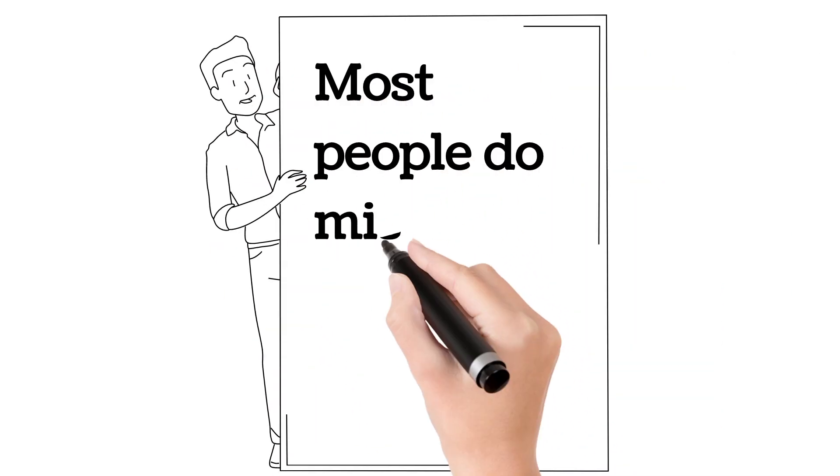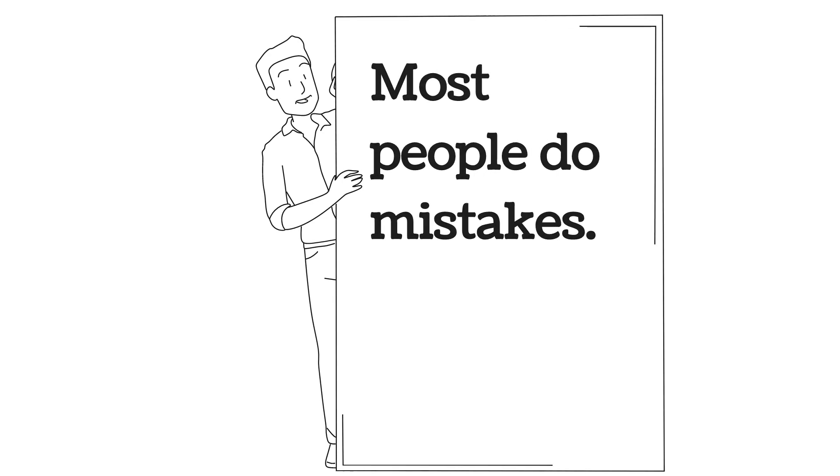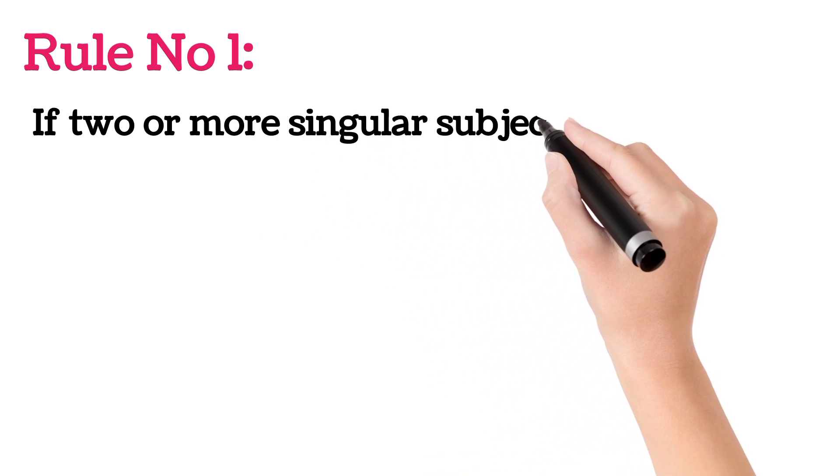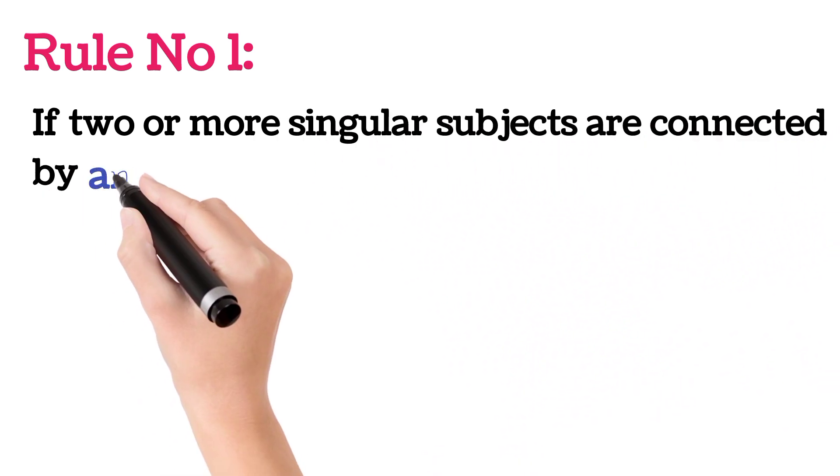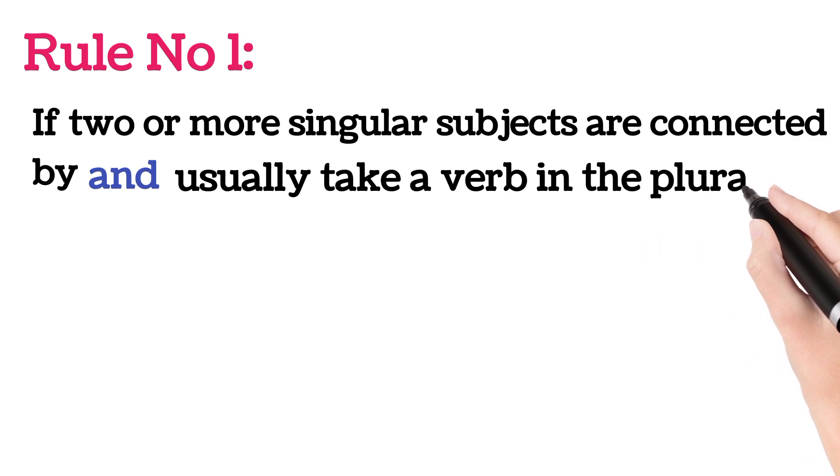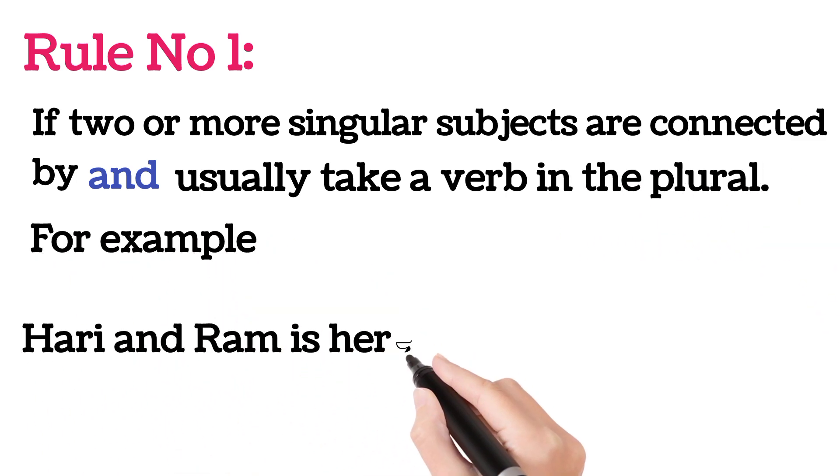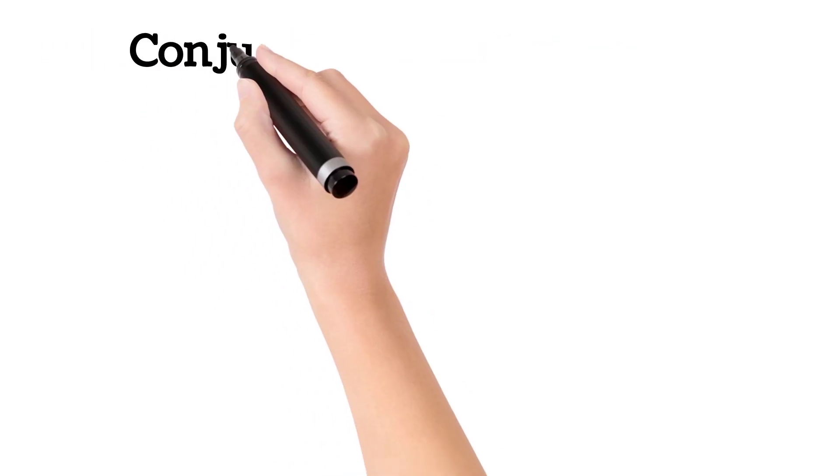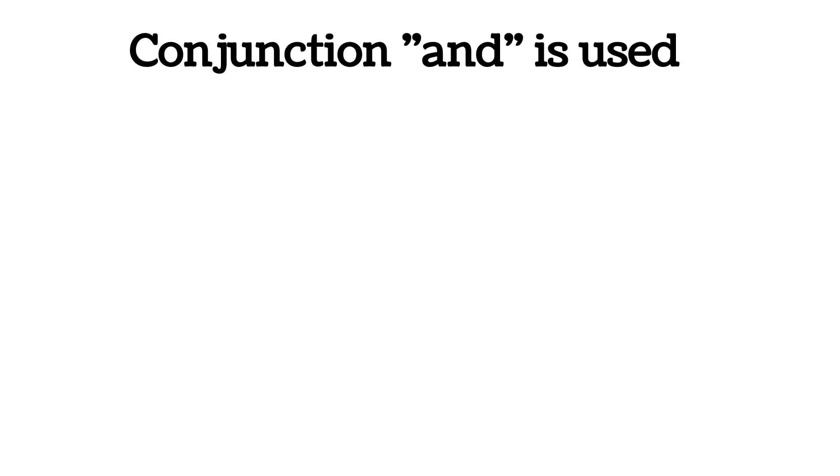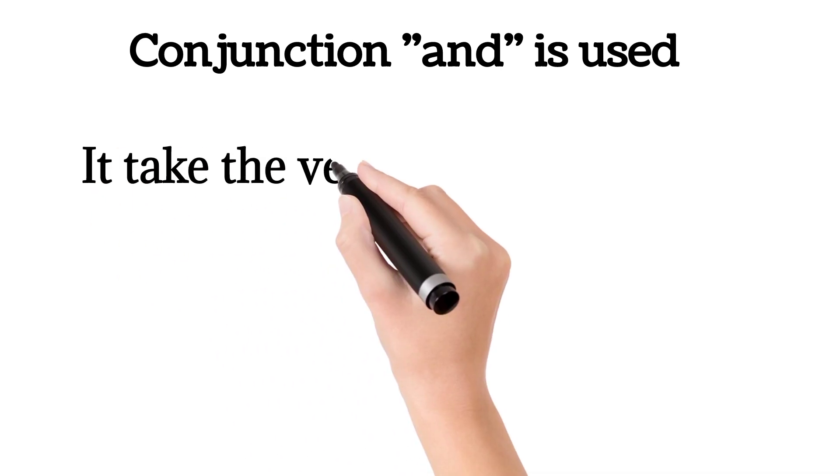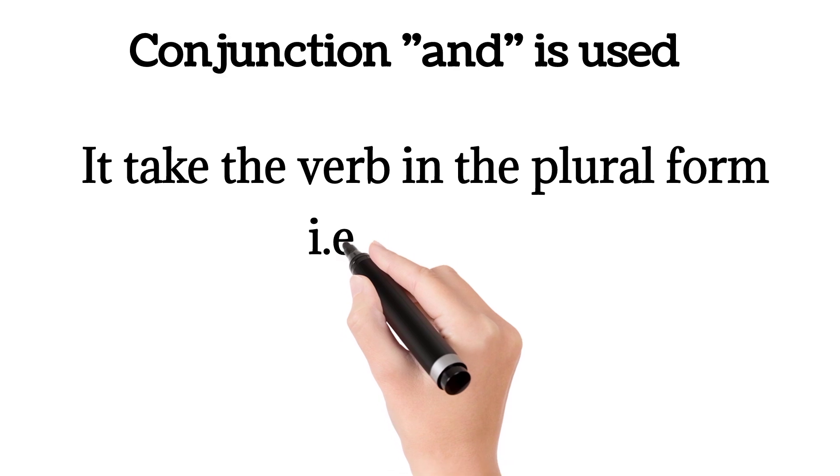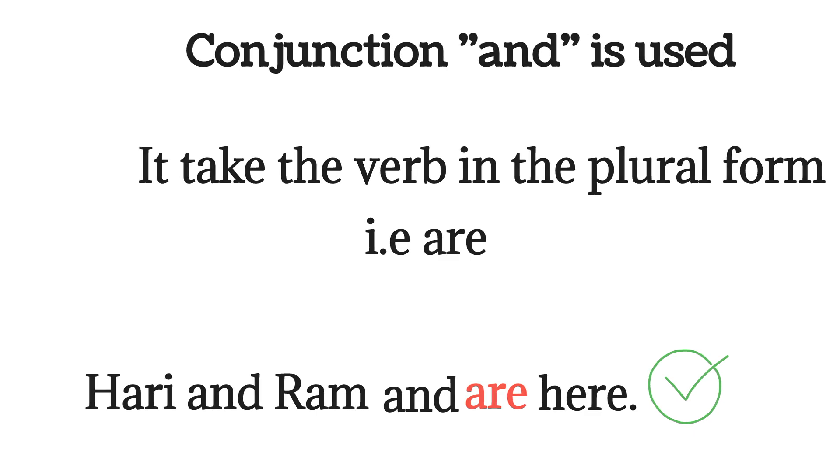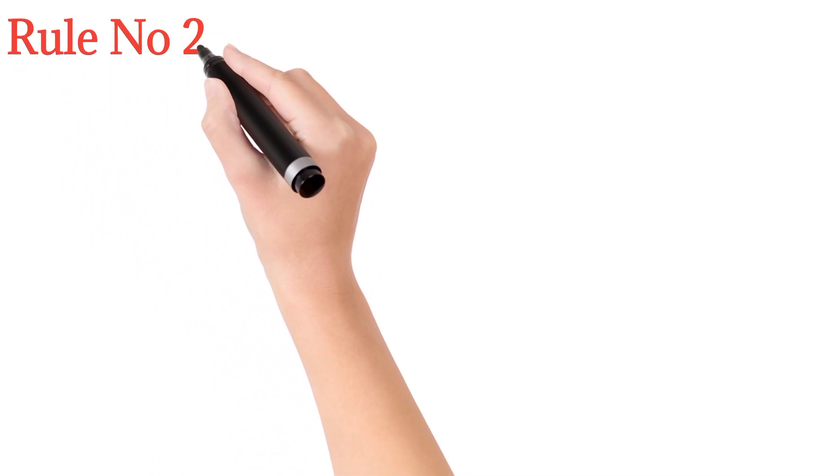Let's start to detect these errors and mistakes. Rule number one: If two or more singular subjects are connected by 'and', they usually take a verb in the plural. For example, 'Hari and Ram is here' - this sentence is grammatically incorrect because here Ram and Hari are connected by the conjunction 'and', so it takes the verb in the plural, which is 'are'. The correct form of this sentence is 'Hari and Ram are here'.